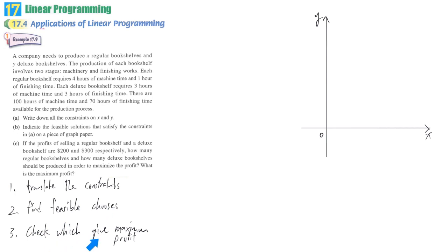Finally, based on the limited choice, we are going to find which point, which combination will give us the maximum profit. So the first stage, we have to translate the constraints.